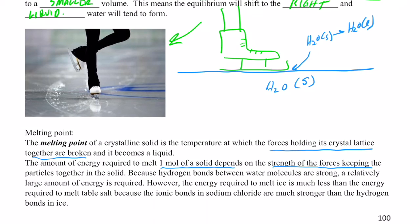Those forces could be London dispersion forces, dipole-to-dipole, ionic bonds, or hydrogen bonds. If we consider water, the hydrogen bonds between water molecules are strong, so a relatively large amount of energy is required to melt water, because the hydrogen bonds between water molecules — not within but between the water molecules — are relatively strong.